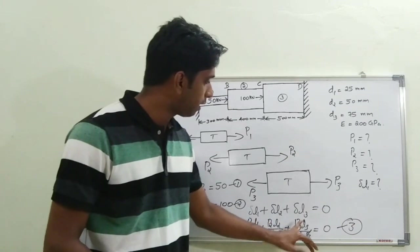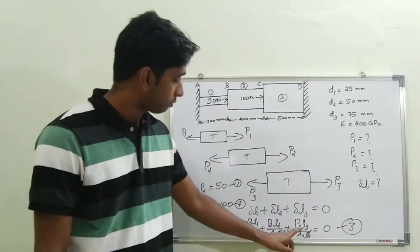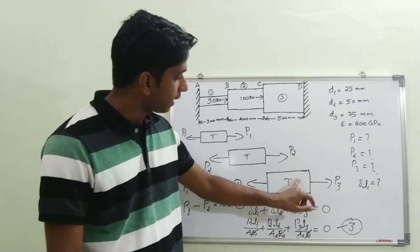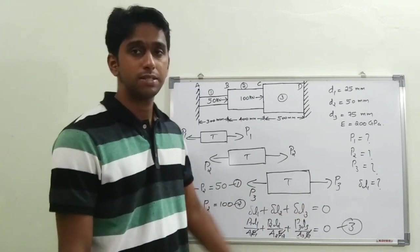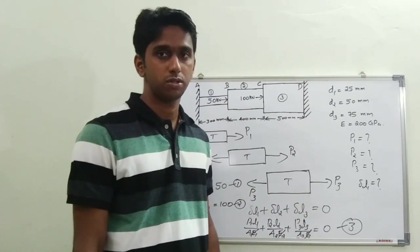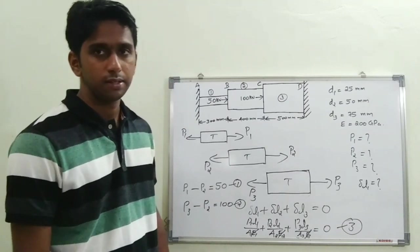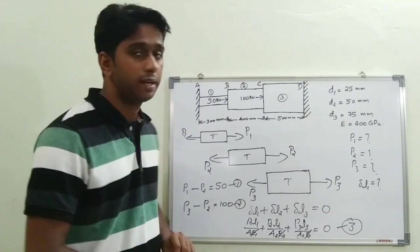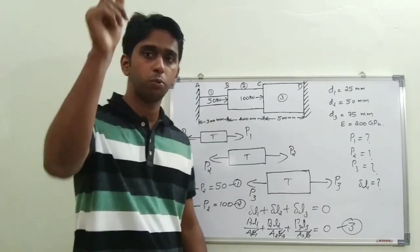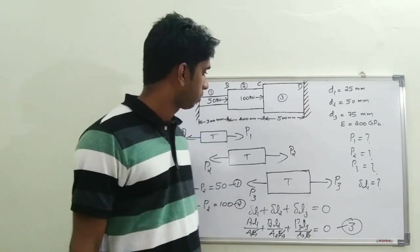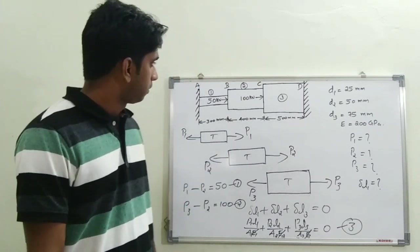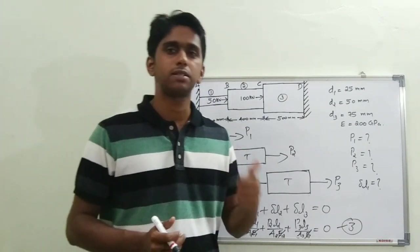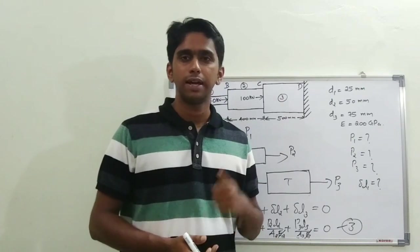If after solving you get a negative value for P1, P2, or P3, that means the loading in that section is compressive rather than tensile. For example, if P3 comes out negative, the third section is under compression. Mention this in your answer by noting the load is compressive. I hope you enjoyed the video — please subscribe and share with your friends.